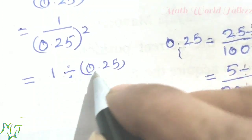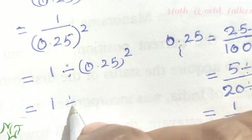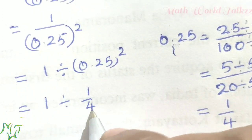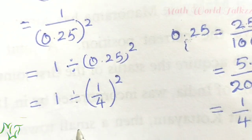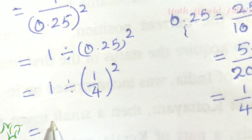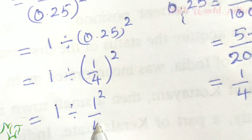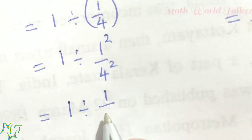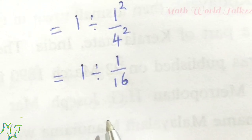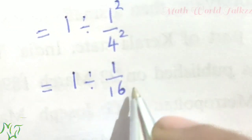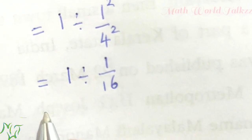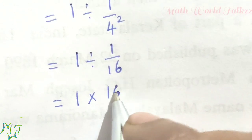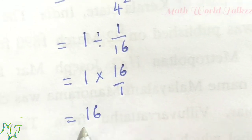So 1 by 0.25 whole squared becomes 1 by (1 by 4) squared, which is 1 by (1 squared by 4 squared), equal to 1 by (1 by 16). Converting to multiplication by writing the reciprocal: 1 into 16 by 1, which equals 16. So the natural number is 16. Hope these answers are all clear to you.